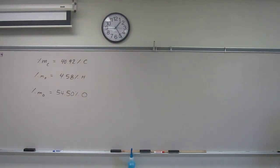Here's another empirical formula problem for you guys. This one says vitamin C or ascorbic acid contains 40.92% carbon, 4.58% hydrogen and 54.50% oxygen by mass. What is the empirical formula of ascorbic acid?